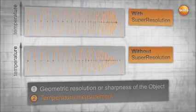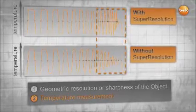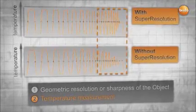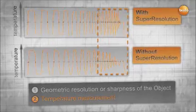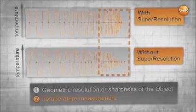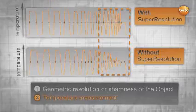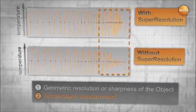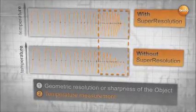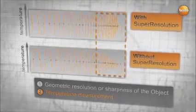Without super-resolution, the temperature is not correctly displayed where the slots get tighter, and the thermographer might be in danger of logging in wrong numbers, which might lead to wrong conclusions. With super-resolution, the measurement, even of tiny structures, remains overall more accurate.